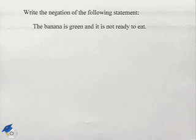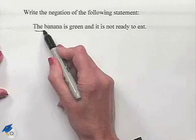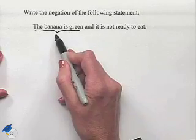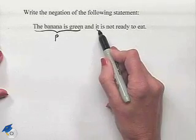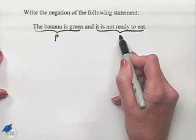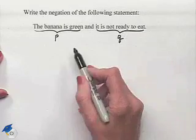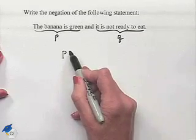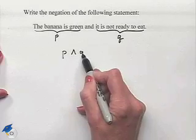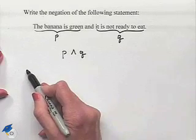Let's write the negation of the following statement: The banana is green and it is not ready to eat. Let's designate 'the banana is green' as statement P and 'it is not ready to eat' as statement Q. We then have symbolically P and Q. We want to negate this.